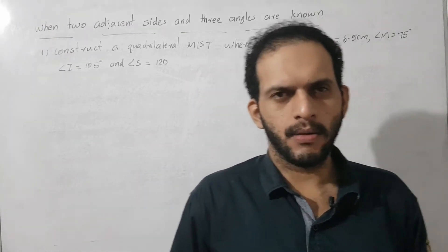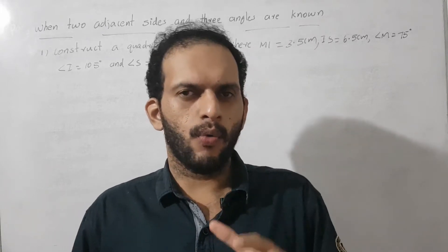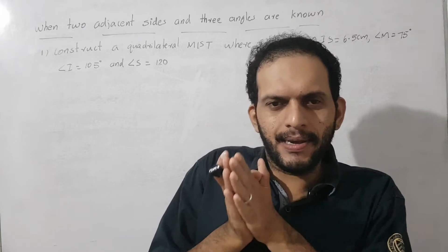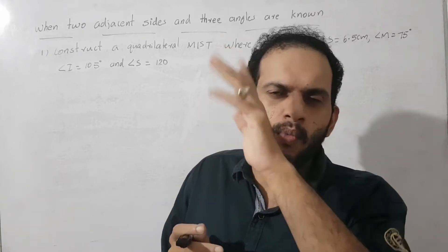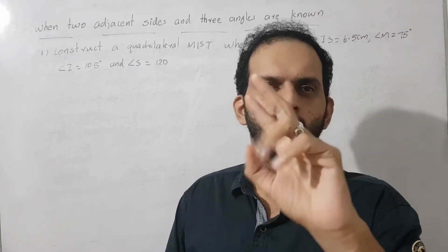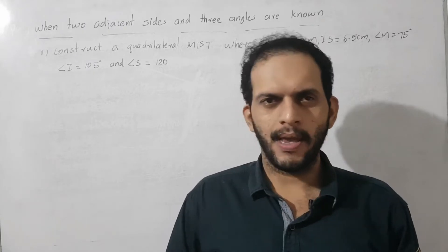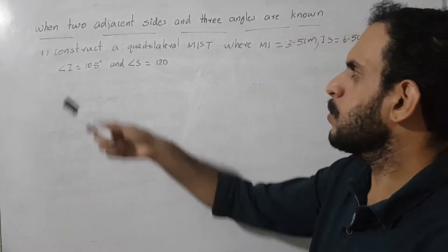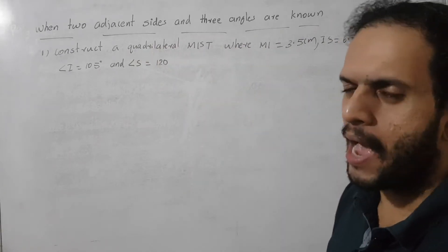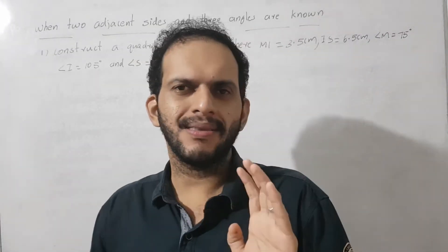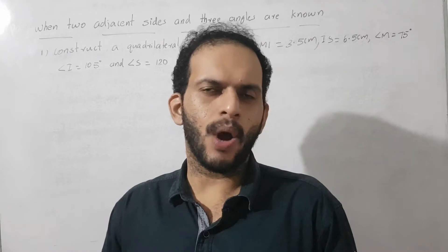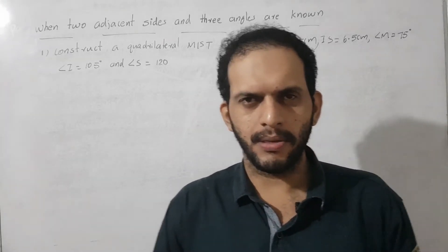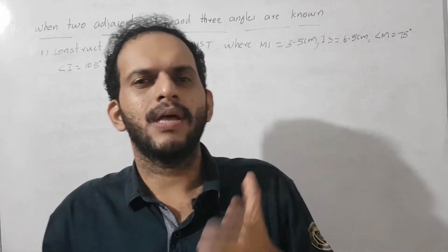Next we go to the next case of the construction of a quadrilateral. We know how to construct a quadrilateral if we get 4 sides and 1 diagonal, 2 diagonals and 3 sides. The next case is we need to construct when 2 adjacent sides and 3 angles are known. If we get the 3 angles and 2 adjacent sides, how do we construct the quadrilateral — that is what we are discussing now.